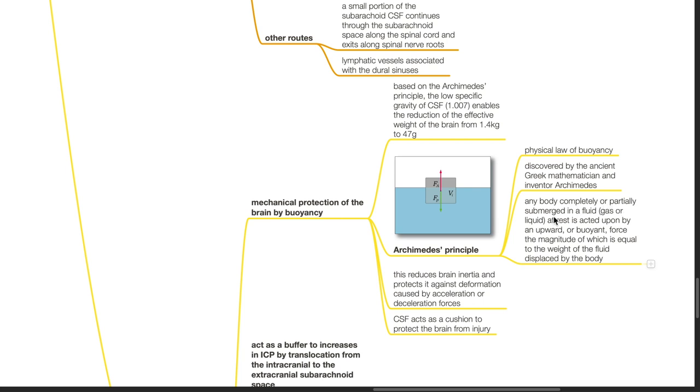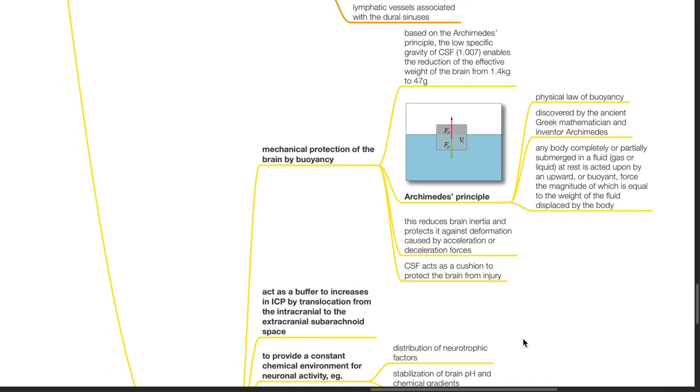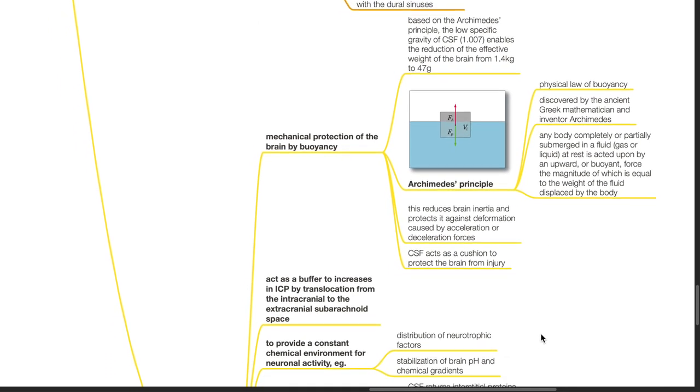The Archimedes principle is the physical law of buoyancy discovered by the ancient Greek mathematician and inventor Archimedes. It states that any body completely or partially submerged in a fluid, which is either gas or liquid, at rest, is acted upon by an upward or buoyant force, the magnitude of which is equal to the weight of the fluid displaced by the body. This reduces brain inertia and protects it against deformation caused by acceleration or deceleration forces. CSF acts as a cushion to protect the brain from injury.